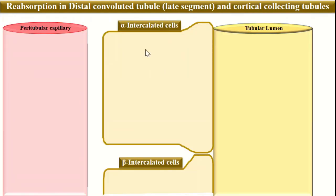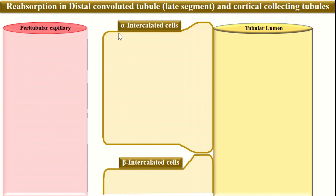These segments of the nephron which have intercalated cells are located in the distal convoluted tubule, later segments, and the cortical collecting tubule. Here we have the tubular lumen, the intercalated cells, and the peritubular capillaries. This is the interstitial. The intercalated cells are further of two types: the alpha intercalated cells and the beta intercalated cells.